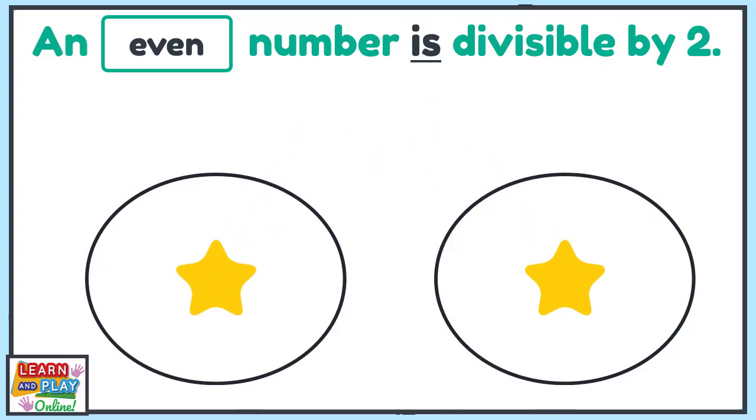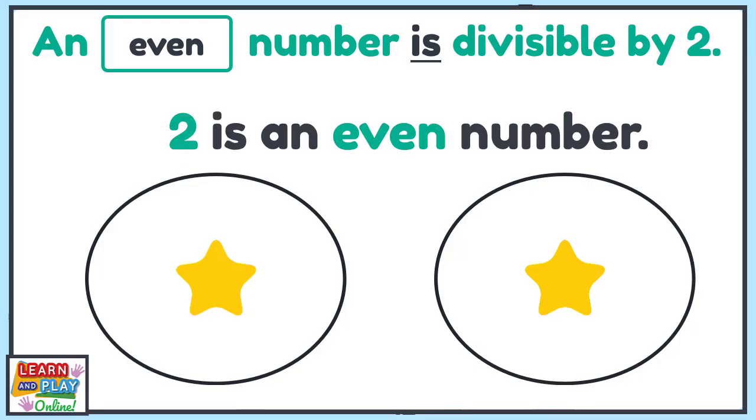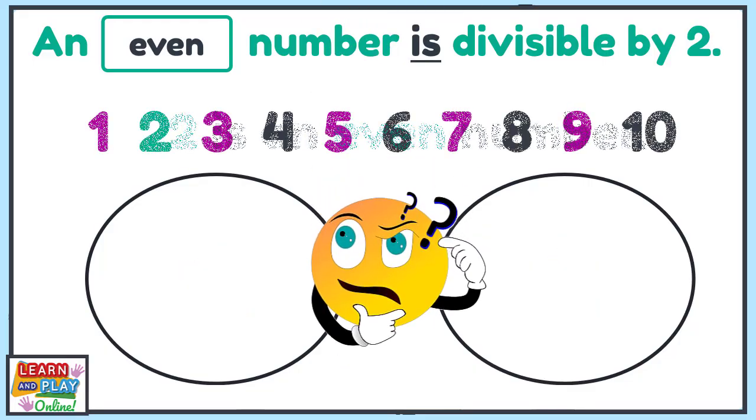As you can see, we have equal groups, which means that the number 2 is an even number. So what would the next even number be?